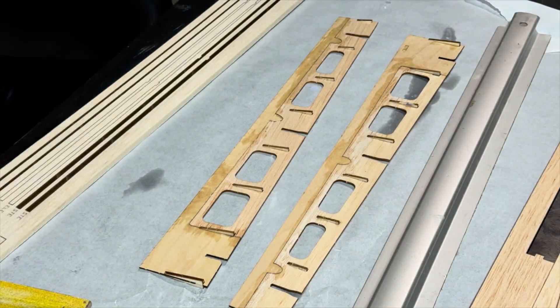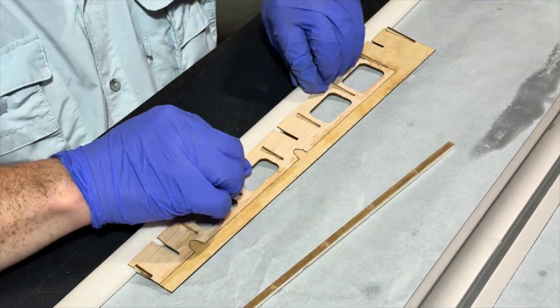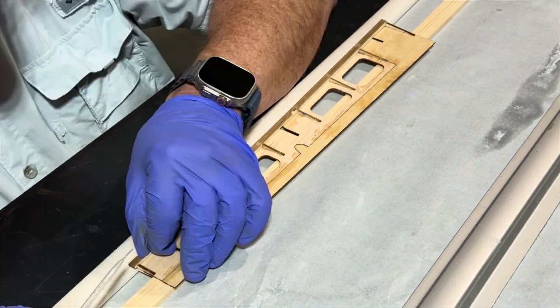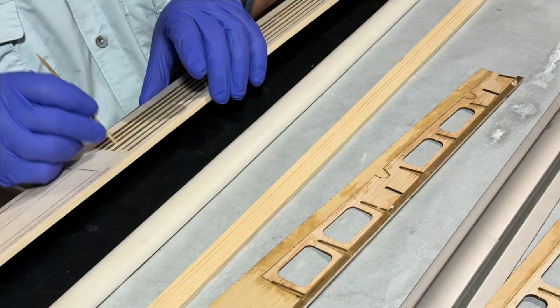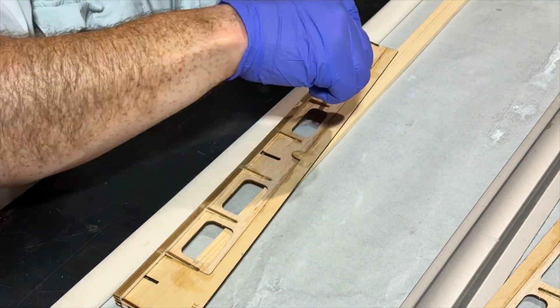One friendly tip, make sure to use thick CA and not thin. Now what we're doing here is we're adding the leading edge to the elevator. And then after this we'll go ahead and we'll actually put the sheeting on the elevator.